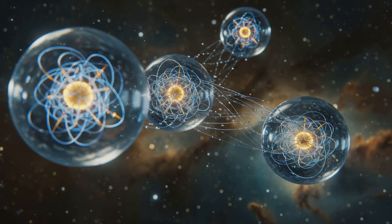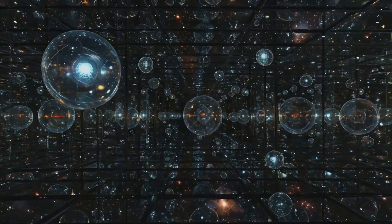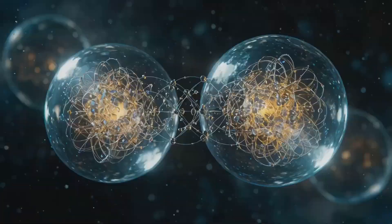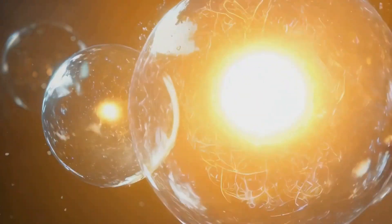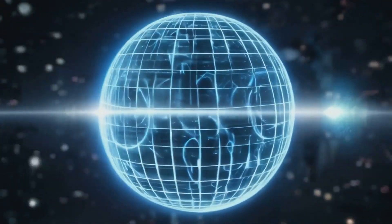Each Bloch sphere is like a mirror, and the entanglement between these spheres creates a system of quantum reflections. The time dilation between entangled Bloch spheres can be visualized as the bouncing of quantum information between mirrors, but in reality the information is entangled.